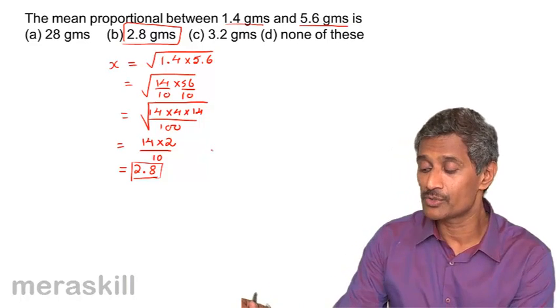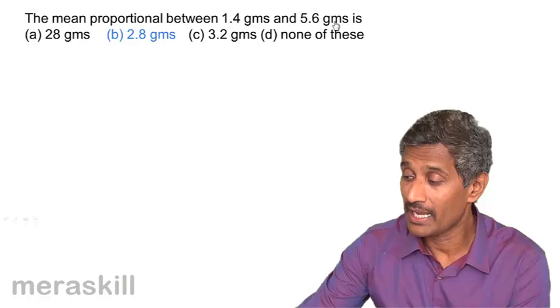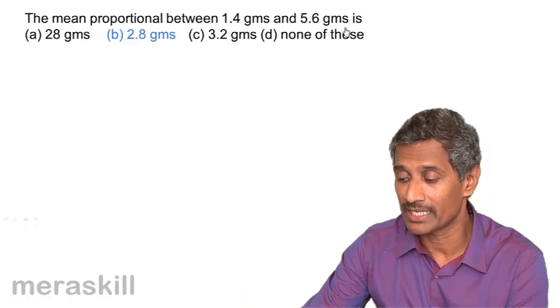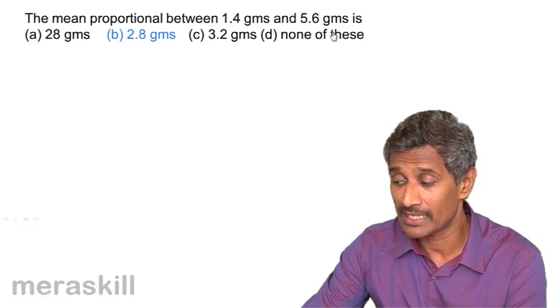So, hence, we have the mean proportional as 2.8 grams. Let's check whether we have it right here and yes, the mean proportional is 2.8 grams. Let's see what is in store for us as the next problem.